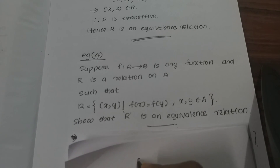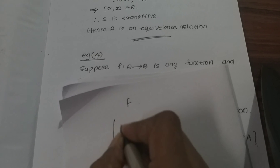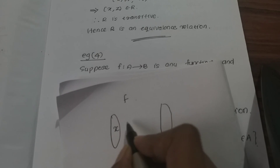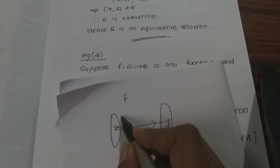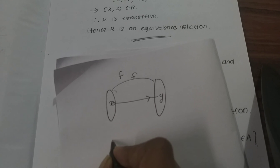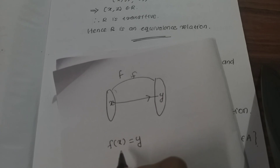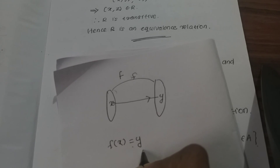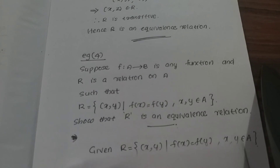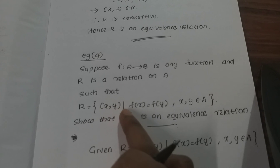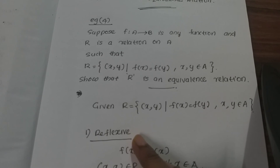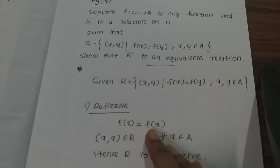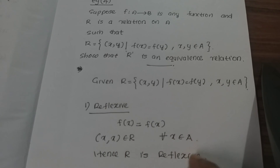For reflexive: f(x) equals f(x) for all x, since any element maps to itself. So f(x) = f(y) when x = y. For example, f(2) = 2 and f(3) = 3. Since f(x) equals f(x), the ordered pair (x, x) belongs to R for all x in A. Therefore R is reflexive.